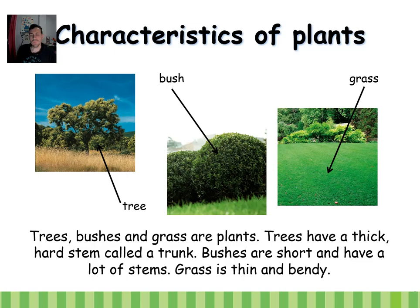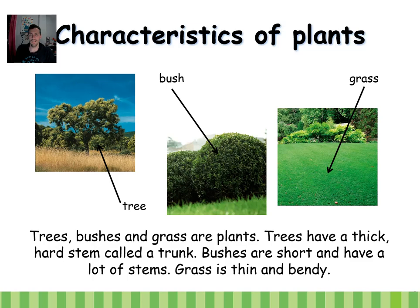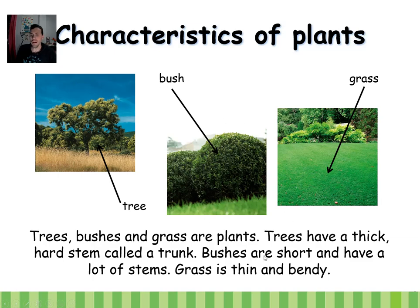Trees have a thick, hard stem called a trunk — very hard. Bushes are short and have lots of stems — many thin stems. And the grass is very thin and bendy.